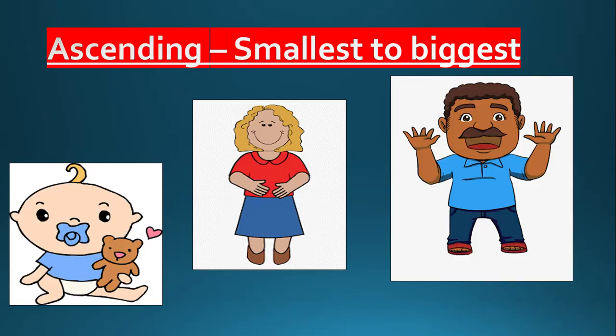So children, I hope you understood the concept of ascending order. Ascending order means smallest to biggest — when we arrange things or numbers from smallest to biggest, it is called ascending order. We can also see this in the last picture: the baby is small in size as well as in age, mother is bigger than the baby, and father is the biggest one. You can also arrange your family members in ascending order and enjoy the activity.